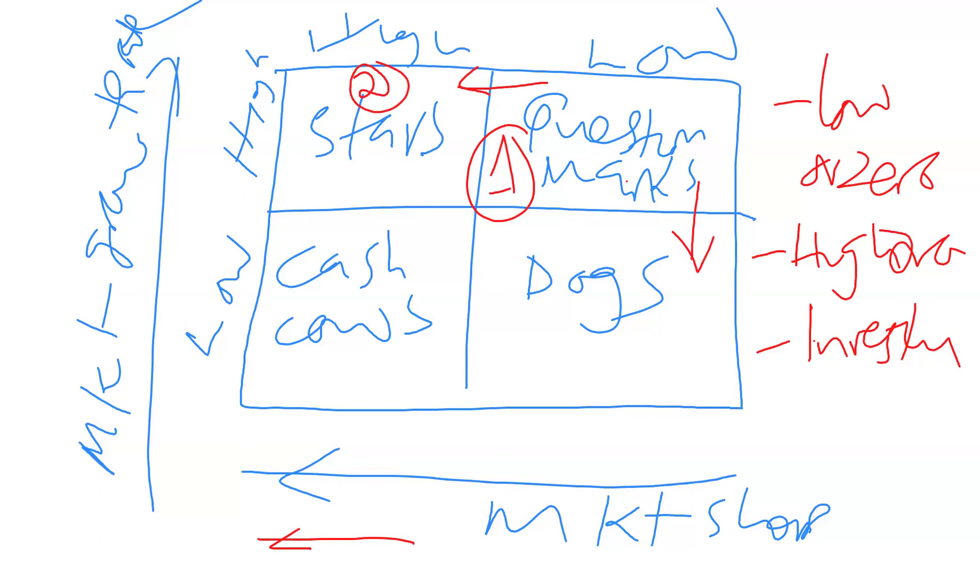From number one, the question marks will graduate into stars. What are the stars? The stars are those businesses that have got a high market share. Check: the market share is high. And again, the market growth rate is high, number two. These are stars in the business. I mean, like these products are stars. The market share is very big and the growth rate again is very fast.